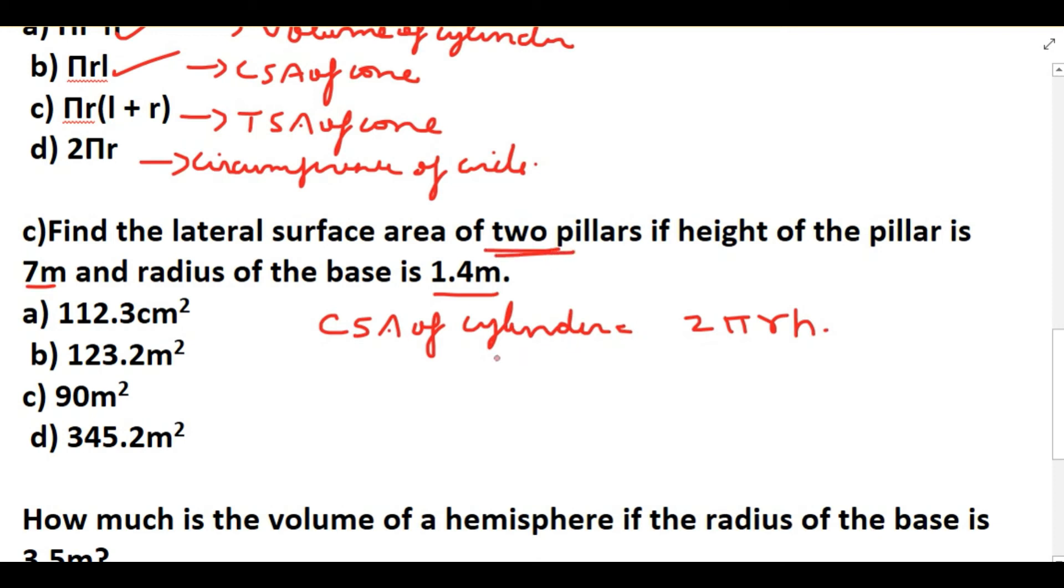2 × 2πrh, so 2 × 2 × 22/7 × radius is 1.4 × height is 7. You can cancel this. Now when you simplify this you will be getting 123.2 m². Answer is 123.2 m².